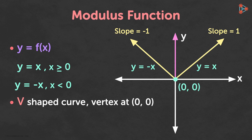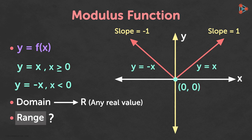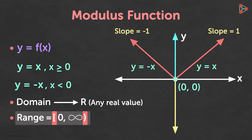The curve is symmetric above the y-axis. The domain of this function is ℝ, since any real value can be an input. The range of this function is the upper half of the real number set including 0, written as [0, ∞). The opening square bracket tells us that 0 is included, and the closing round bracket tells us it can take values up to infinity. So this was all about the modulus function, and we will see another interesting function in the next video.